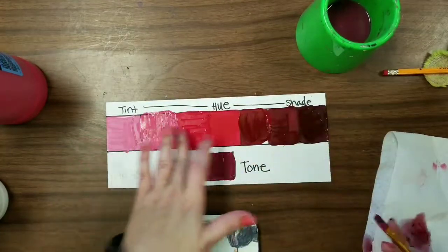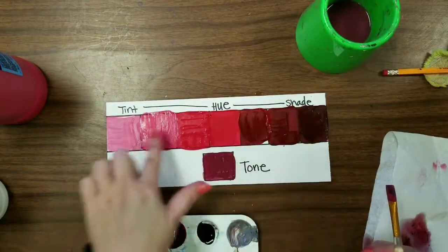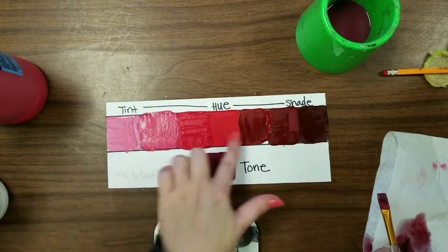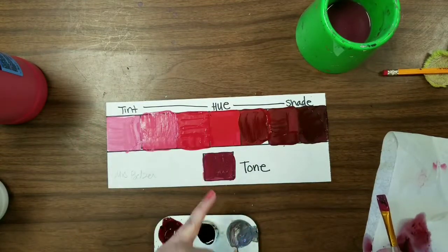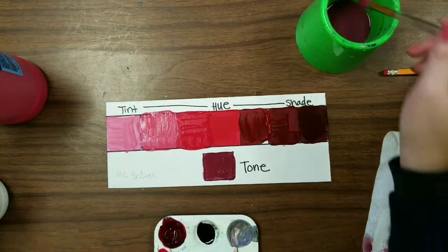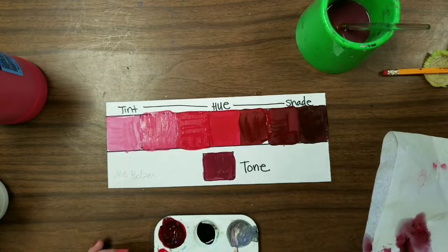So when you're done, you should have seven separate shades, like on your value scale from light to dark. And you also have the tone in a separate place. Make sure you clean your spot and put everything away when you're done.